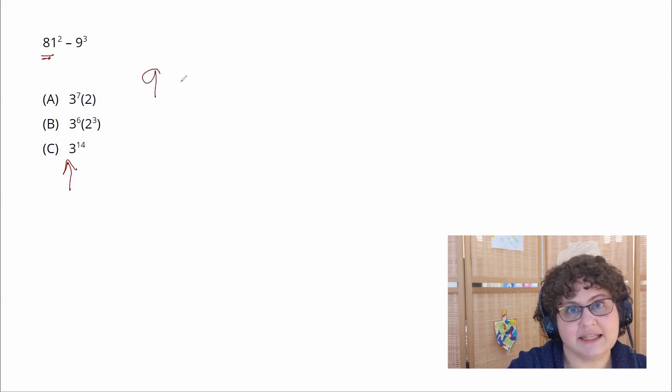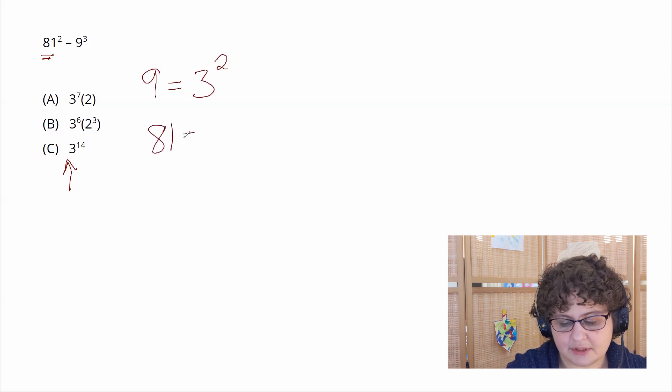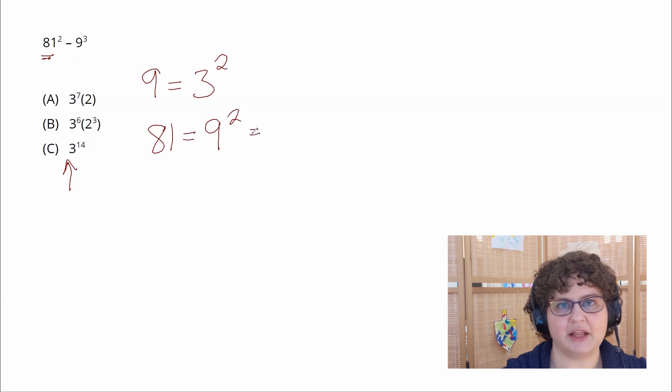We know that 9 is the same thing as 3 squared and 81 is 9 squared. So I can continue that on and say well 81 is 9 squared meaning it is 3 squared squared.